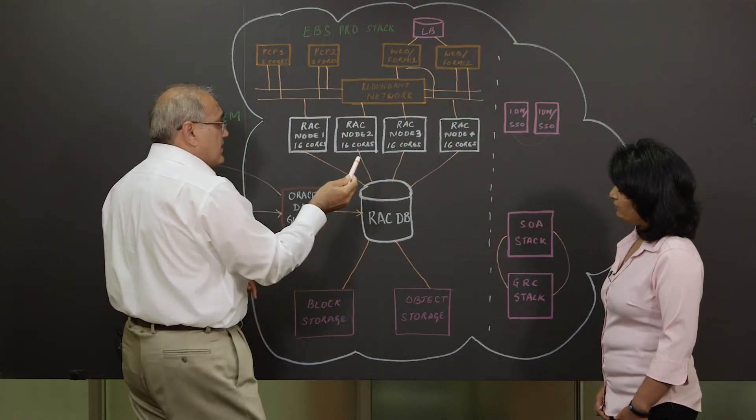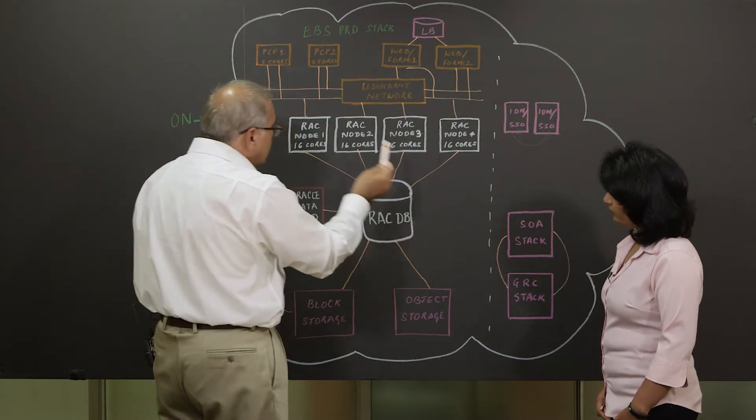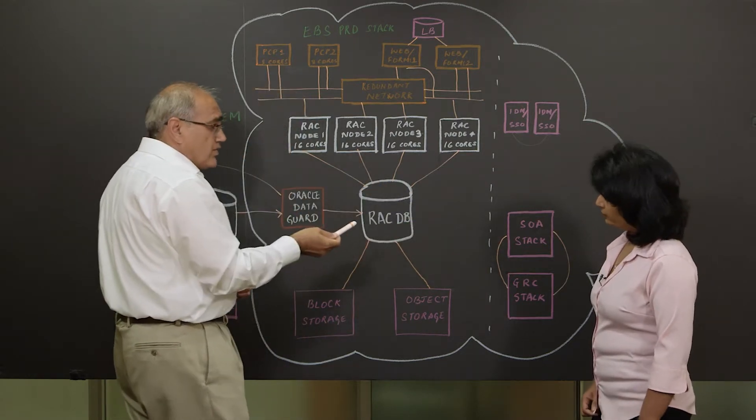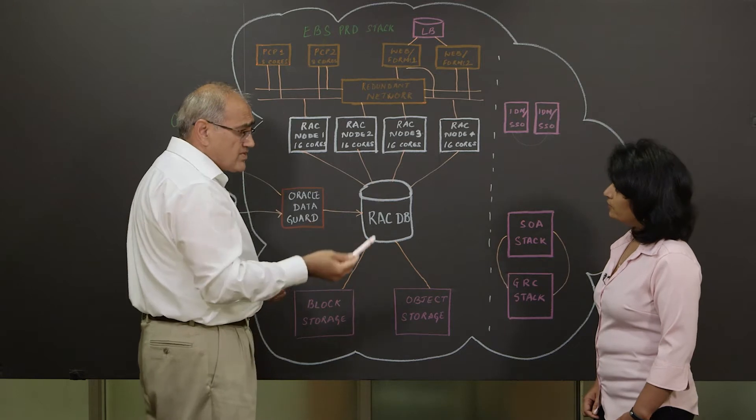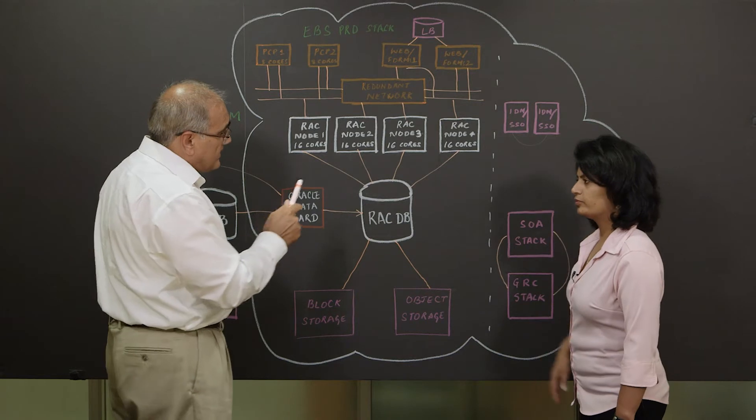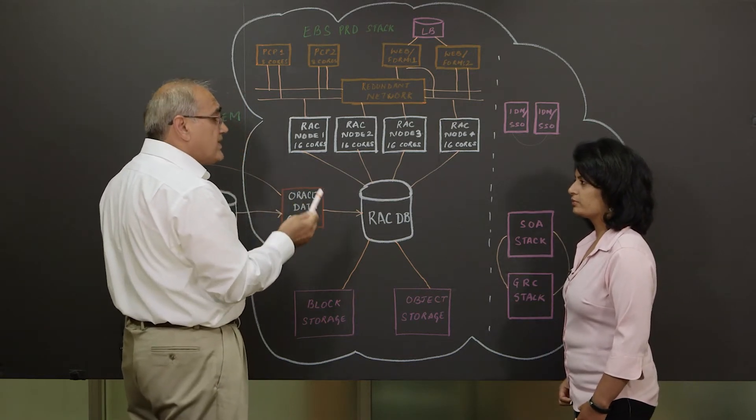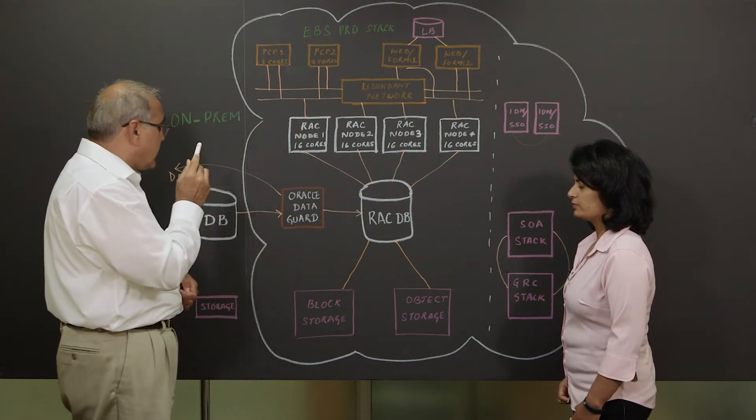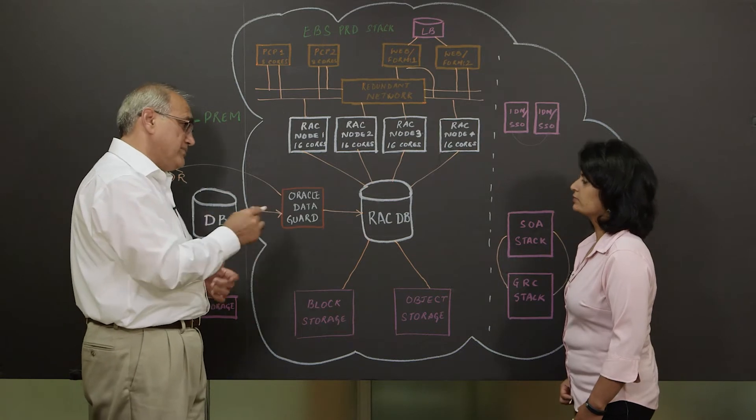We had redundant network and all of these nodes were connected to the network using host bus adapters. We also had four RAC nodes. Each of them were 16 core CPU and 256 GB of memory. That's quite a bit of computational power over there. That's the computational power that we needed to make sure that our performance is better than on-prem.